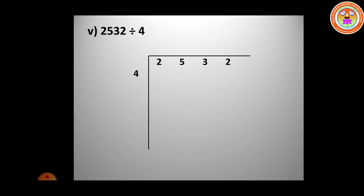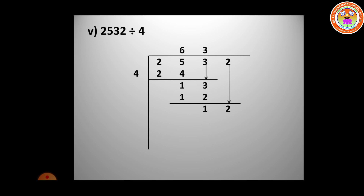The next question is 2532 divided by 4. The dividend is 2532 and the divisor is 4. Since 2 is less than 4, take 25 together. Six 4's are 24, remainder 1. Bring down — 13. Three 4's are 12, remainder 1. Bring down — 12. Three 4's are 12, remainder 0. The quotient is 633 and the remainder is 0.